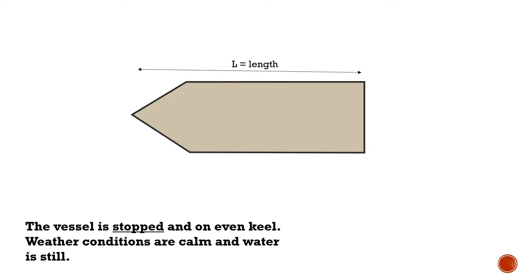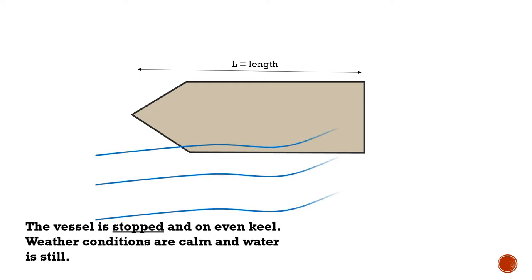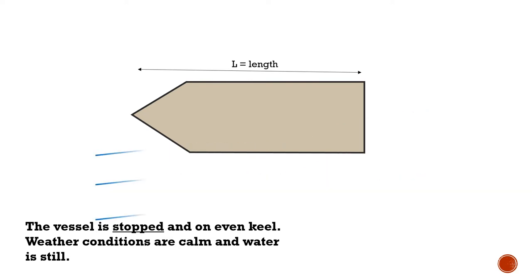In the first case, this is a ship that is stopped and it is on even keel — meaning the forward and after drafts are the same — and the weather conditions are very calm with still water. In this situation, when the ship is stopped, no forces are involved and the ship has a pivot point that coincides with its center of gravity. This pivot point is located approximately at half the length of the ship, at amidships.